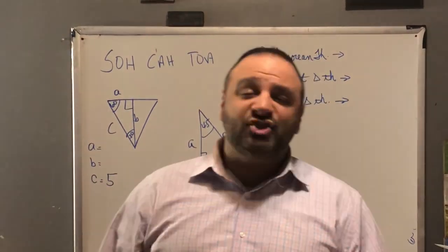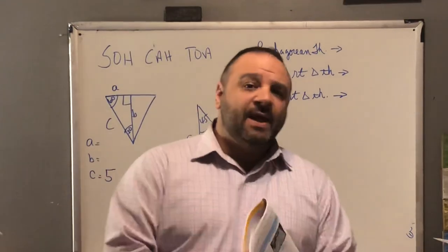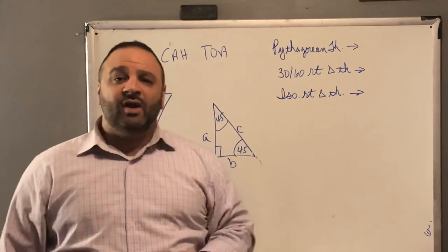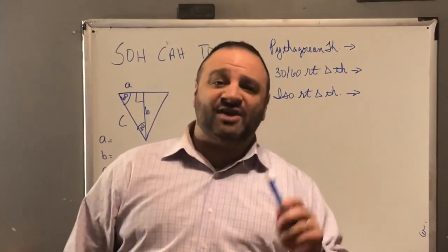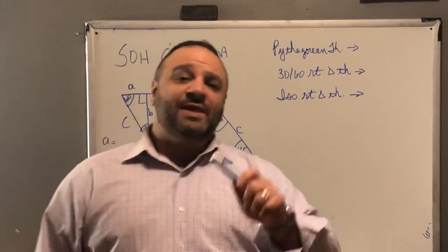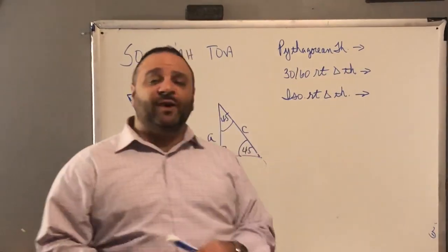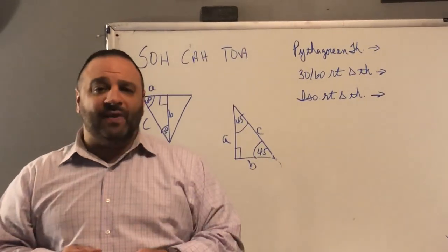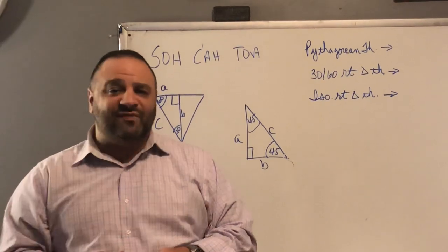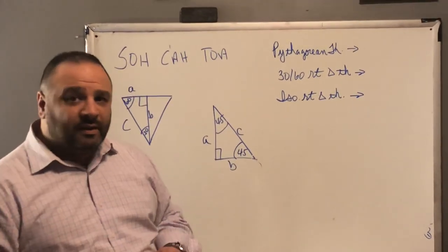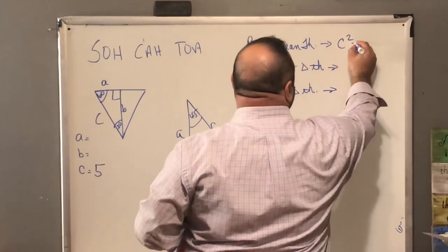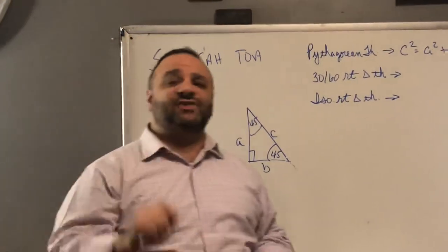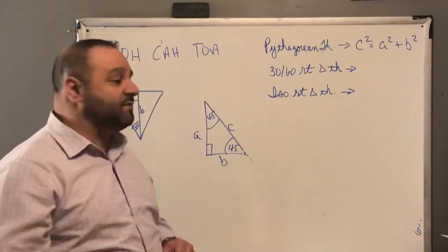We're going to open up to page 24. A couple students had questions about that. I just want to quickly reiterate some of the three special cases of right triangles. If we're trying to figure out the length of the sides of a triangle, we would use the Pythagorean theorem. Joey, what's the Pythagorean theorem? C squared equals A squared plus B squared. So that's if we want to find the lengths of the sides of a right triangle.